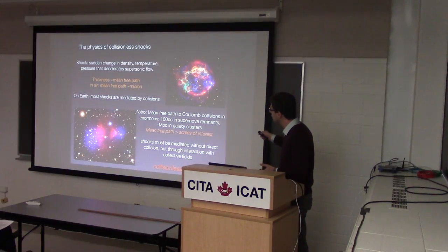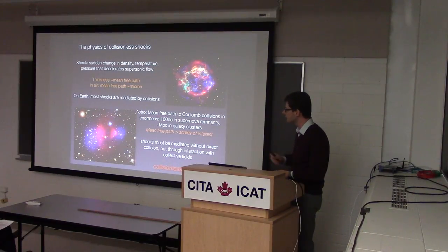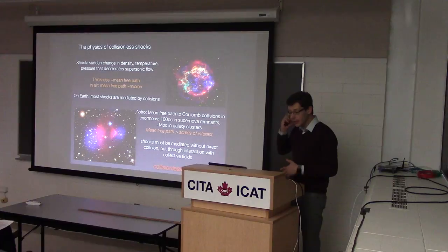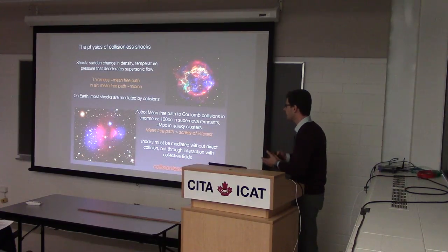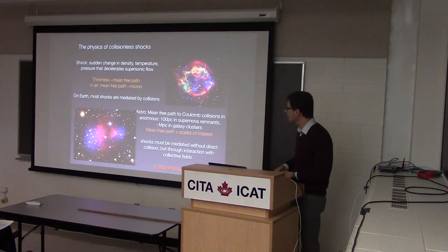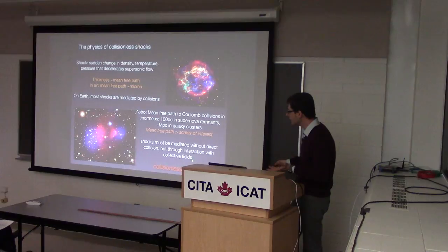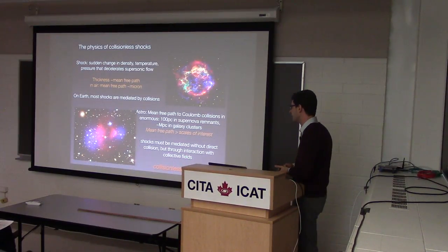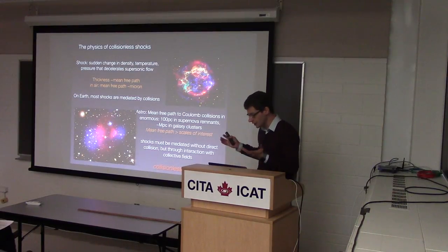A mean free path in a supernova remnant can be as big as the supernova remnant itself. In a galaxy cluster, it's like a quarter of the galaxy cluster. So relying on Coulomb collisions to mediate shocks is difficult, yet we do see very sharp structures.